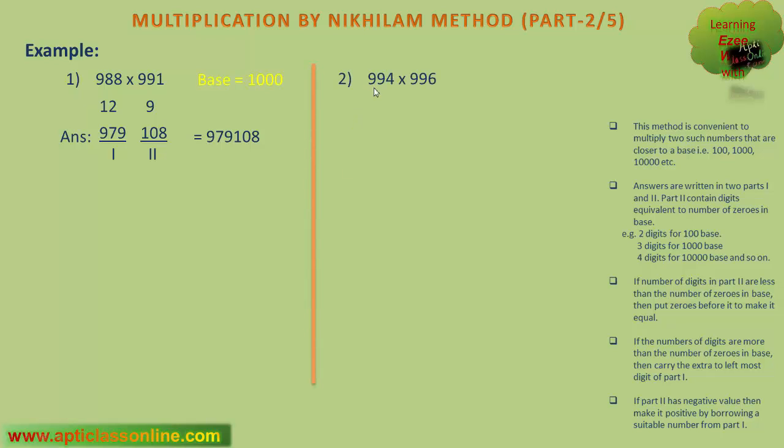Let us proceed to our next example, 994 into 996. 994 is how much less than 1000? That is 6. And 996 is how much less than 1000? That is 4. So once we have done it, we can write down the answer. In the first part, we will write the difference of 994 and 4, or 996 and 6, which is 990.